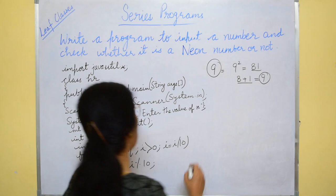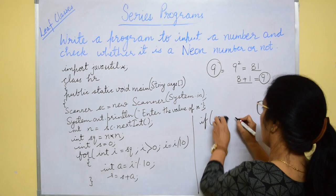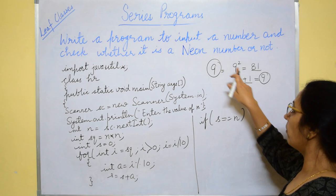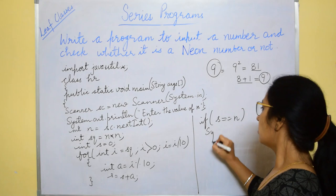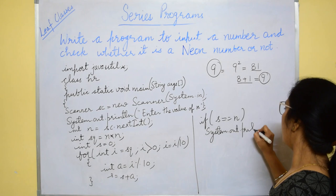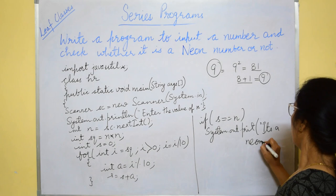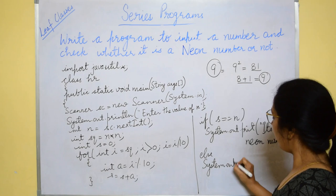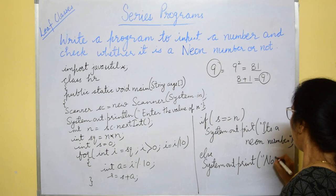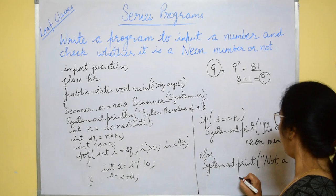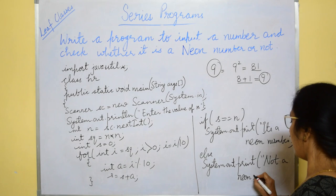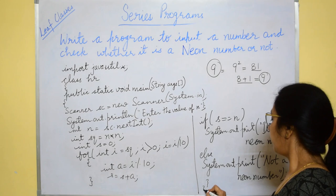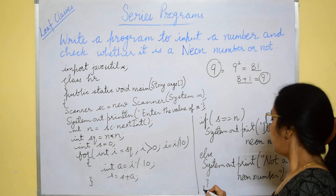So, here you will give if s equals to n. s contains the sum of the square of the number. If s equals to n, you simply have to print that it is a neon number, else not a neon number should be printed. So, whenever you are printing, print using proper message and printing statements are system.out.print and println statement. I hope these two statements are clear. If not, please let me know using comment. After this, you will close main and you will close class. Now, I hope this program is also clear to you.